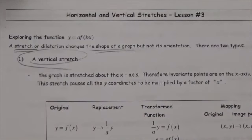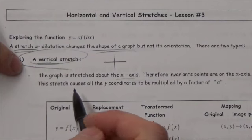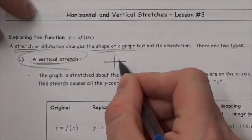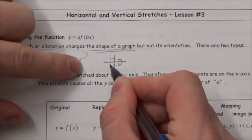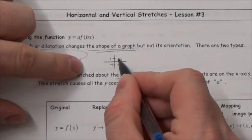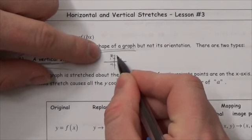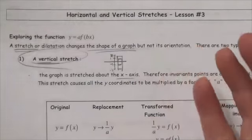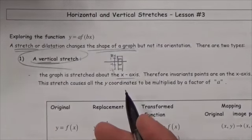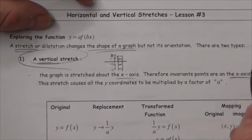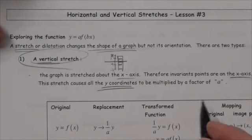There are two types. We've got a vertical stretch, where we stretch something vertically about the x-axis. If you've got a shape sitting on the x-axis and you stretch it by a factor of 2 — say it goes from negative 1 up to 1 — the top part will go up to 2 and the bottom will go down to negative 2. The motion moves away from the x-axis, so the invariant points are on the x-axis. The stretch causes all the y-coordinates to be multiplied by the factor.